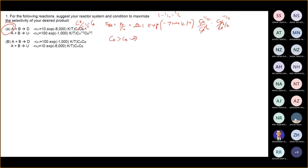So one of the methods to increase selectivity — what do we need to do? Increase A. Yeah, correct. So we need to increase A, but we need to keep CB low.